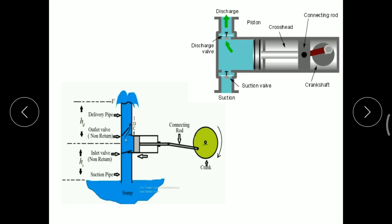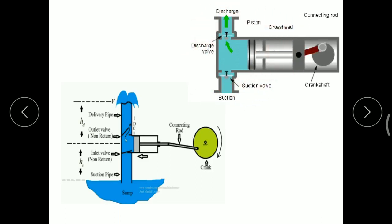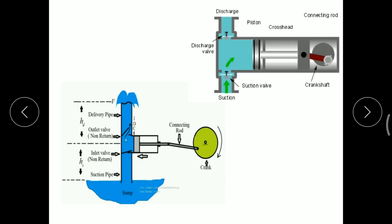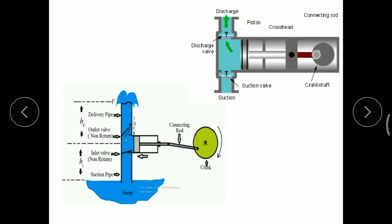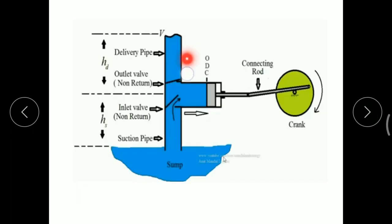Now we will see the importance and use of air vessel in reciprocating pump. We know that reciprocating pumps are pulsating type of pump — the rotary motion gets converted into reciprocating motion by some arrangement, and therefore the piston moves in a reciprocating direction, moving back and forth. At the same time, a negative pressure is generated inside the cylinder. When the piston moves from top dead center toward bottom dead center, the suction valve gets opened and water is sucked into the cylinder cavity.